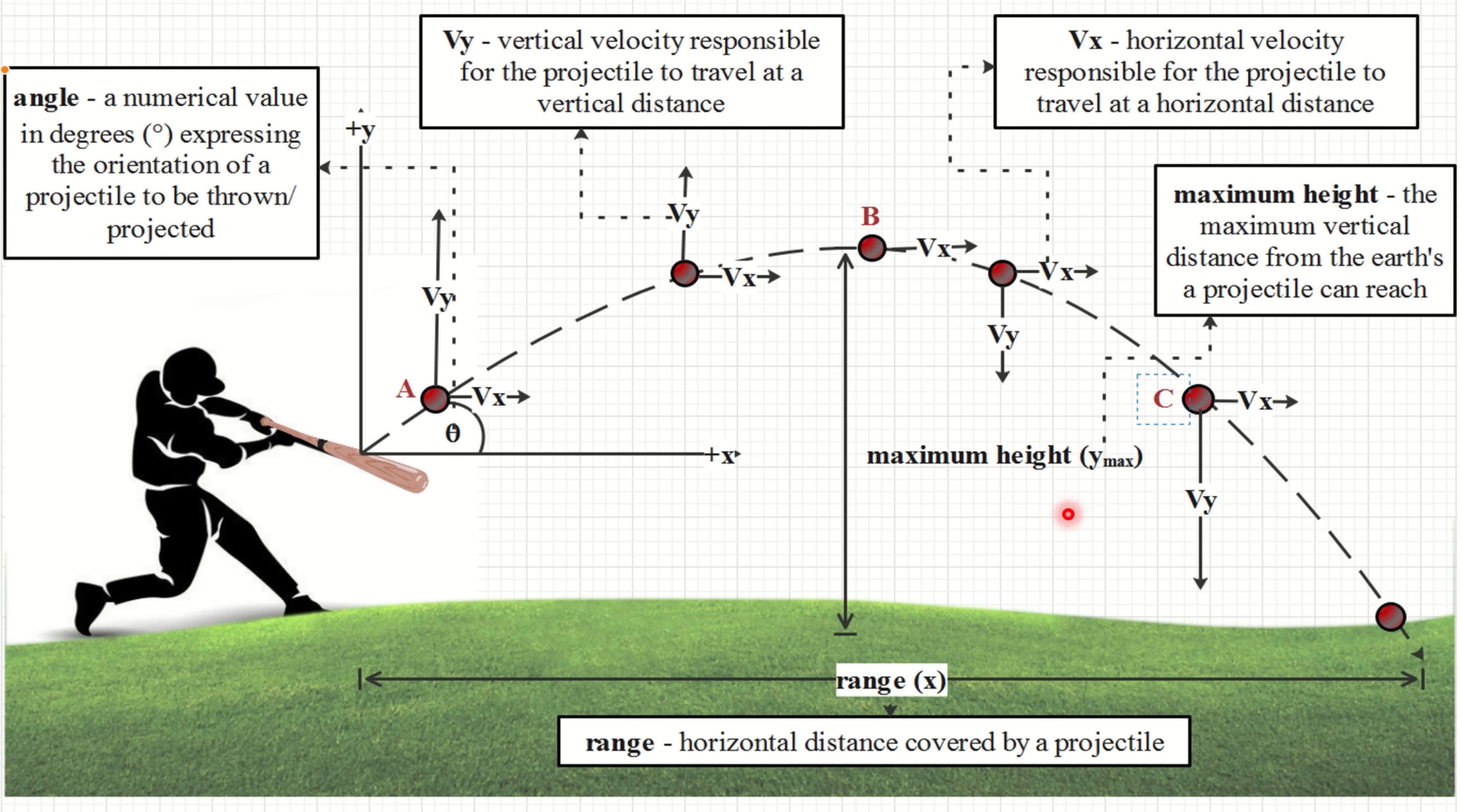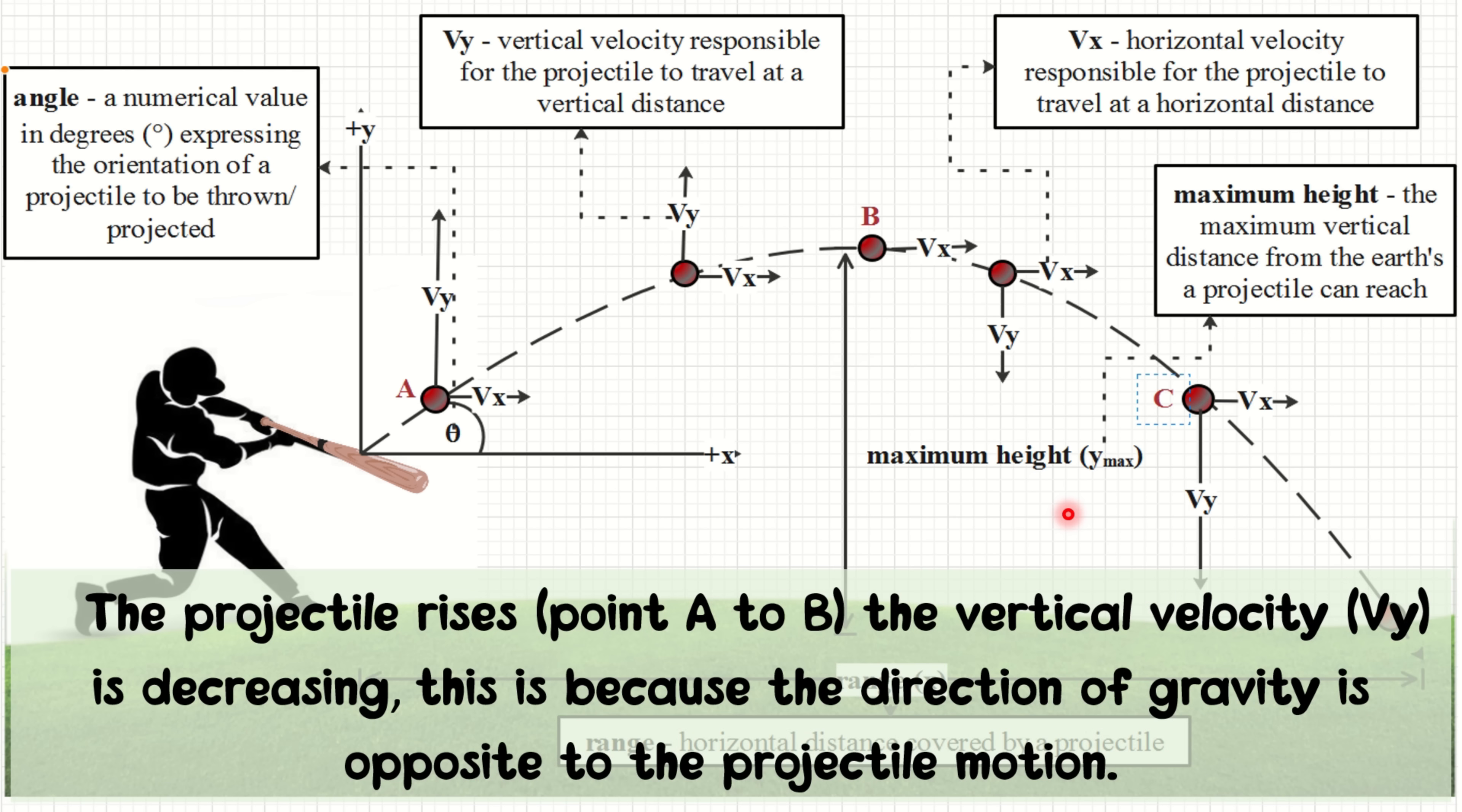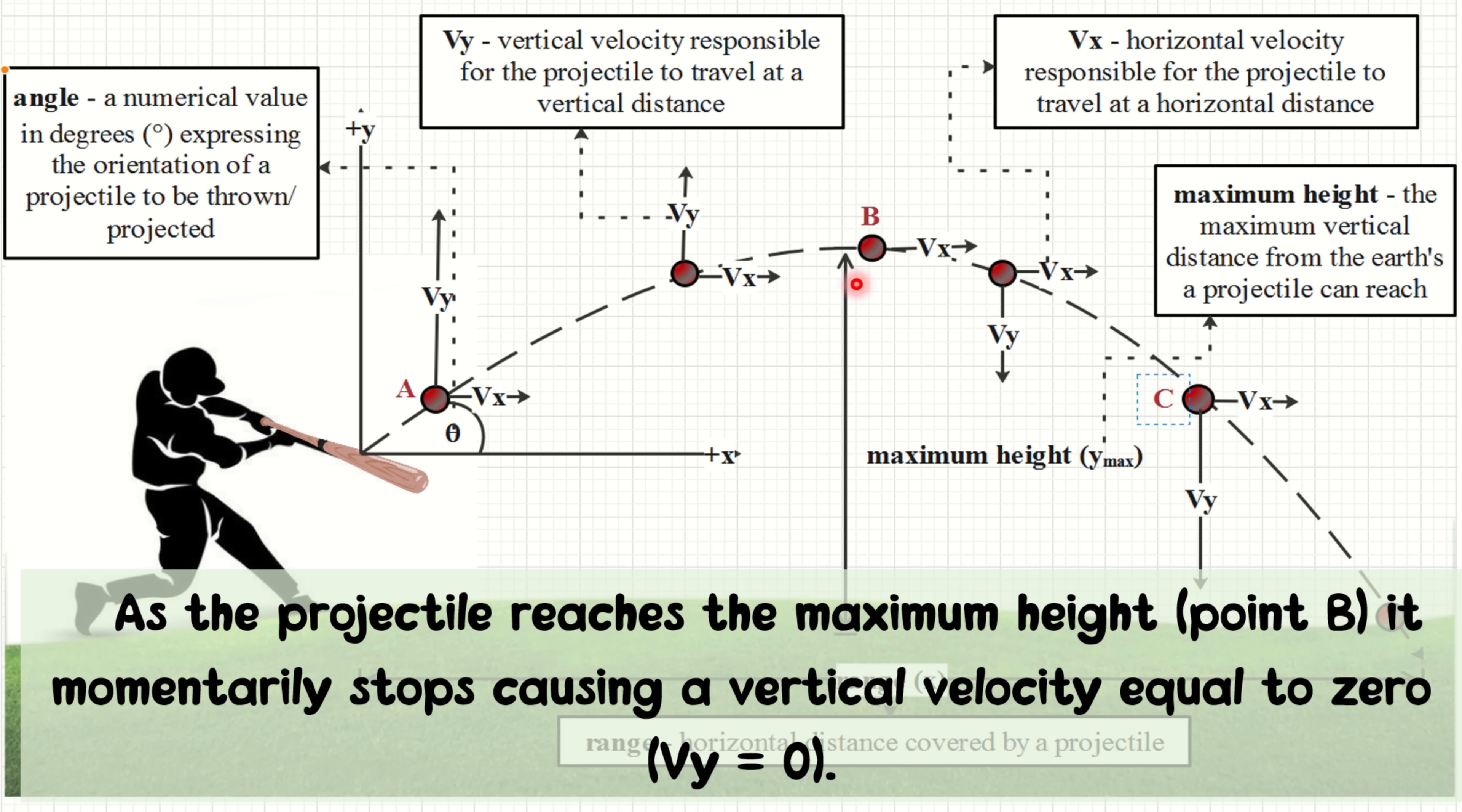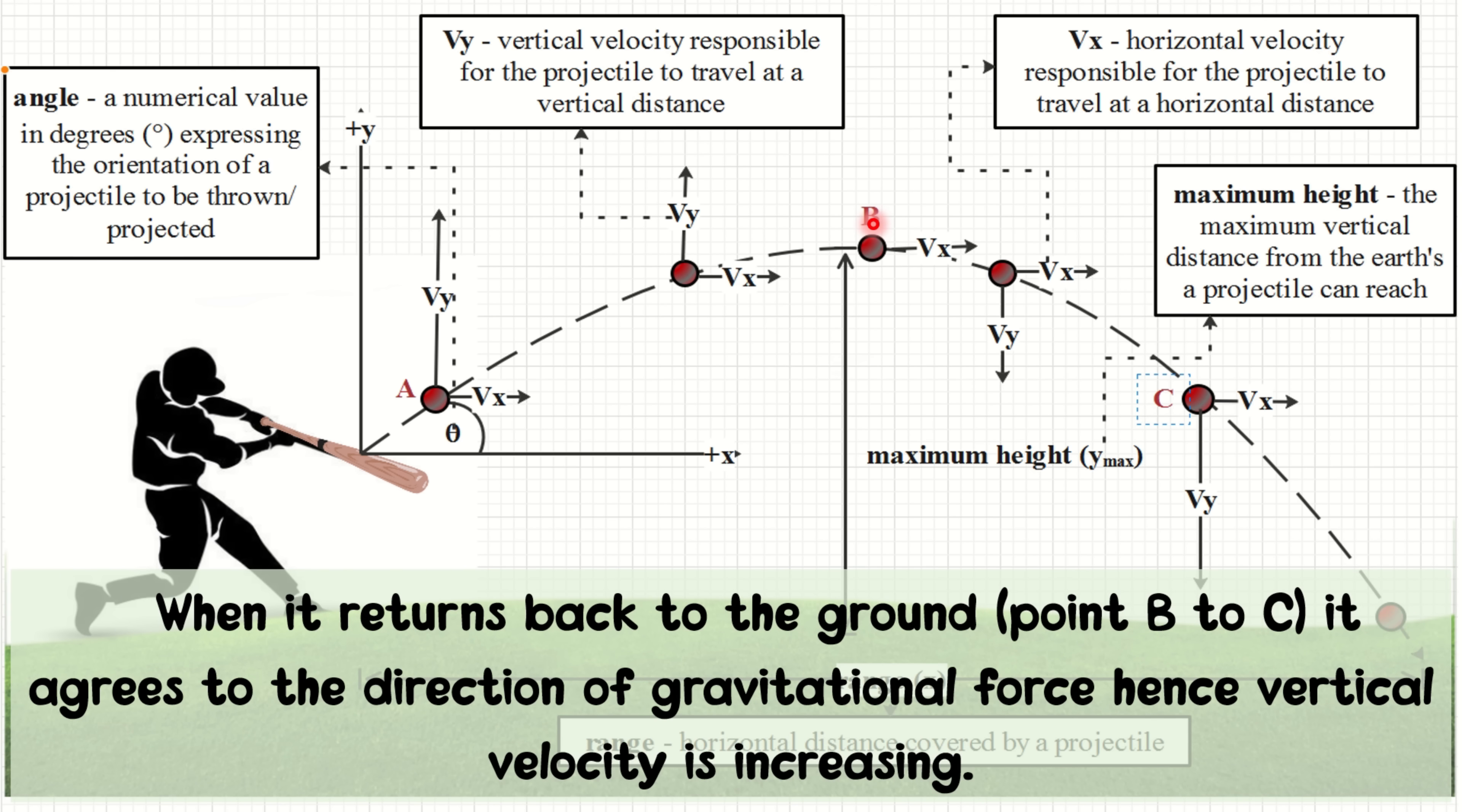For angle-launched projectile, horizontal velocity or Vx is still constant while the vertical velocity can be described in three parts. First, from the picture, as you observed, the projectile rises from point A to point B, the vertical velocity or Vy is decreasing. This is because the direction of gravity is opposite to the projectile motion. Next, as the projectile reaches the maximum height, which is point B, it momentarily stops, causing a vertical velocity or Vy equal to zero. And third, when it returns back to the ground, from point B to point C, it agrees to the direction of gravitational force. Hence, vertical velocity is increasing.